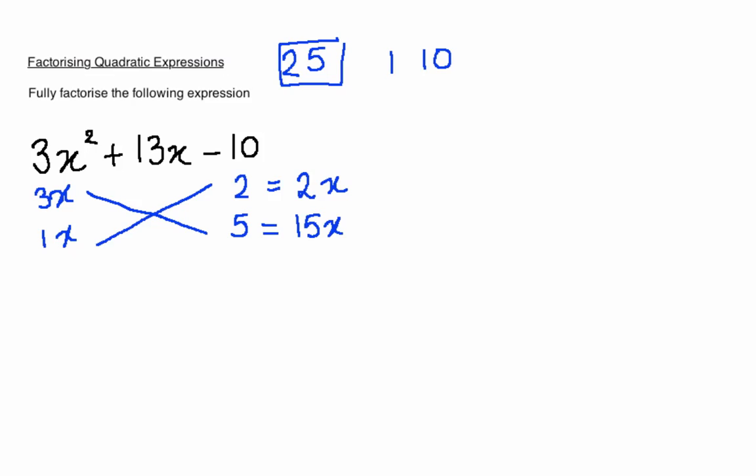Now the only way we are going to get from these expressions a number that is the same as plus 13 is if we add to plus 15x a minus 2x. We are still adding these numbers together, it's just that they both have a chosen sign in front of the actual expression. Plus 15x minus 2x will give us a plus 13.